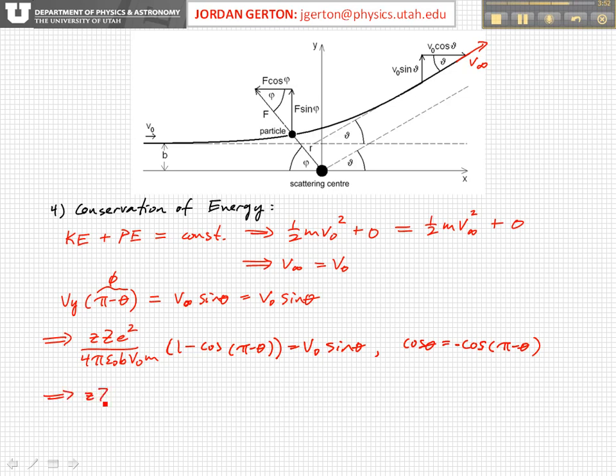And so, little z, big Z, e squared, over 4 pi epsilon naught, b, v naught, times m, is equal to v naught times sine theta over 1 plus cosine of theta.